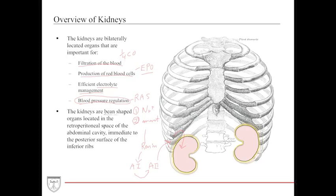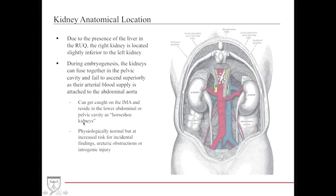The kidneys are bean-shaped organs located in the retroperitoneal space, in close contact with the inferior ribs, which puts them at risk for puncture and injury with inferior rib fractures such as in a motor vehicle accident. Because the liver is in the right upper quadrant, it pushes the right kidney a little further down than the left kidney.